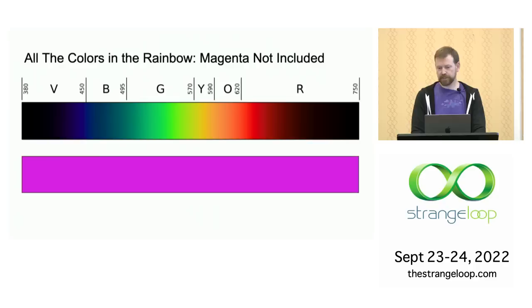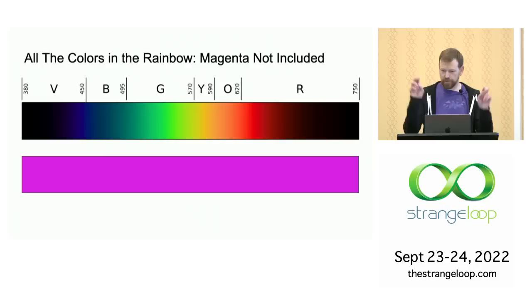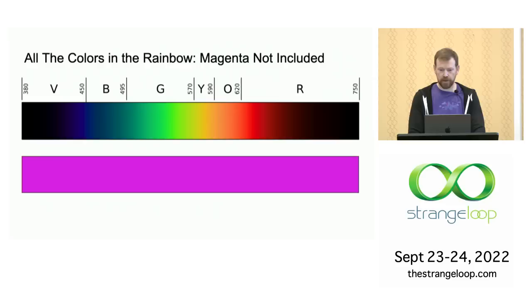When we see color, it's the result of different wavelengths of light hitting our eyes. A rainbow occurs when light varies gradually across the wavelengths we're sensitive to. However, all the colors in the rainbow are not all the colors we perceive. Rainbows only contain what are called spectral colors — colors that are made of a single wavelength. Rainbows notably lack magenta, because we perceive it when light from both ends of the spectrum but not the middle — that is, red and blue but no green — hits our eyes simultaneously.